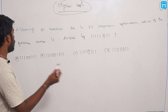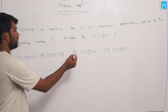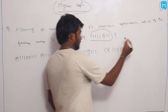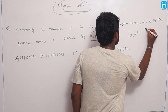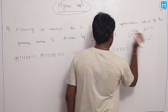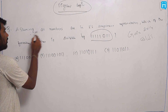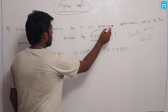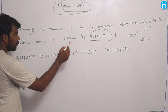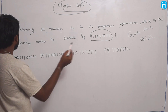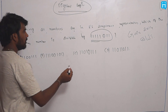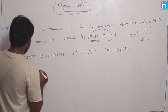Our next question from digital logic: assuming all numbers are in 2's complement representation, which of the following numbers is divisible by this number? This question was asked in GATE 2014 Computer Science and IT. All given numbers are in 2's complement, and we need to find which is divisible by the given number — so first we need to find what that number is.